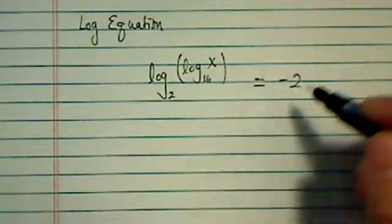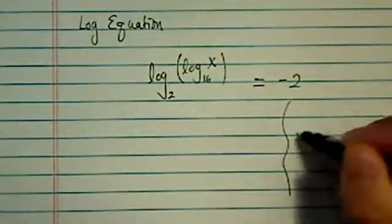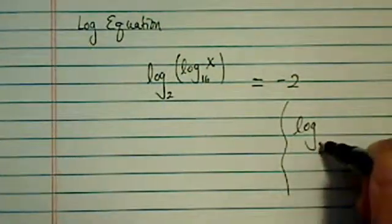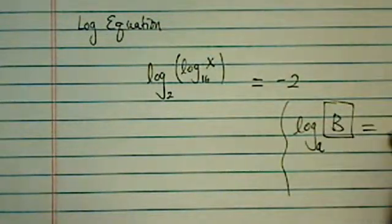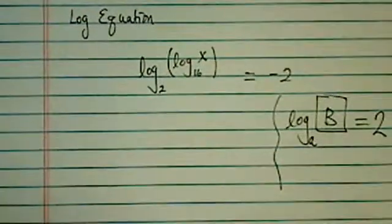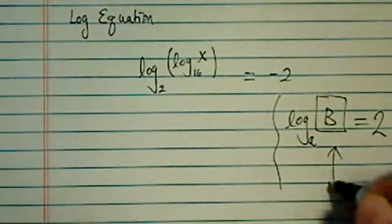The key point about logarithms is you have to recognize log base A of something, let's say is equal to 2. The thing you need to do is translate it into exponential form.